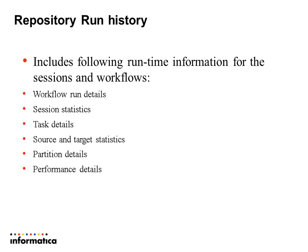What is run history information? Whenever we run a workflow, the repository service process processes all the performance data and interrelated information across the tables of the repository database. These tables contain runtime information which can be classified into the following categories: workflow run details, session statistics, task details, source fetch and target load statistics, partition details, and performance details across the transformations.